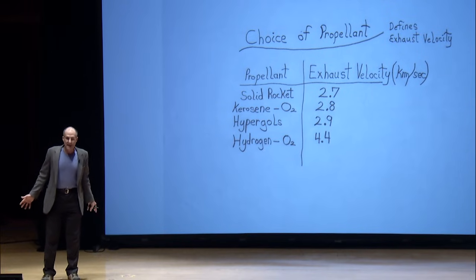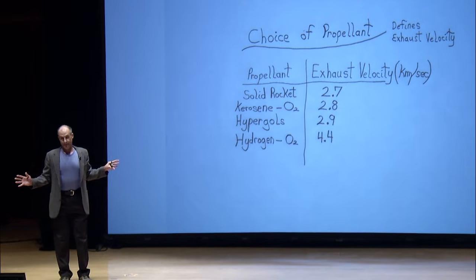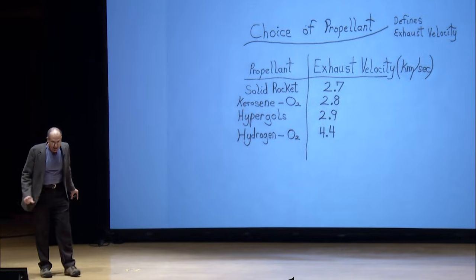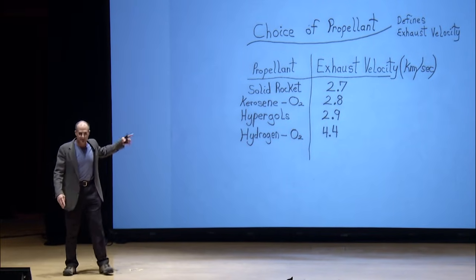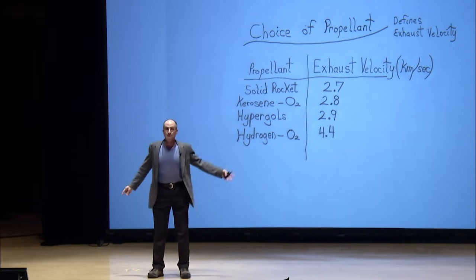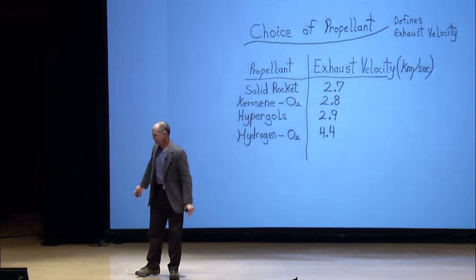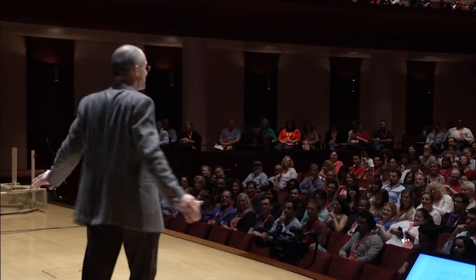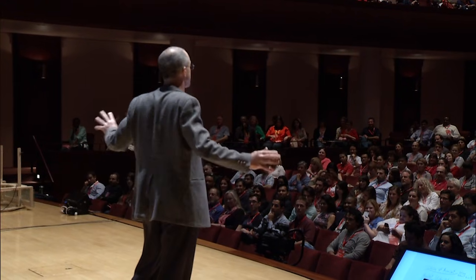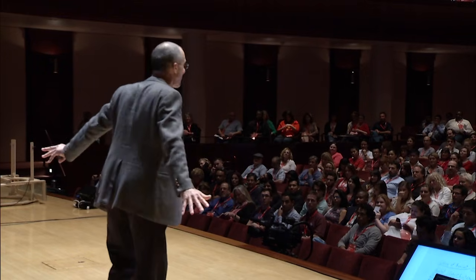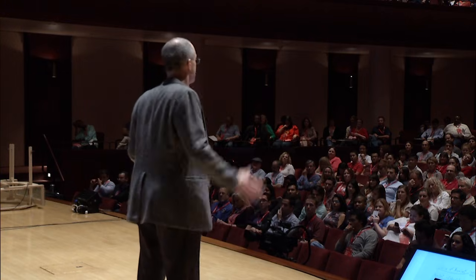Now let's look at our choice for propellants, and this defines the exhaust velocity because the energy in the propellant comes from the chemical bonds and it goes squirting out the nozzle. I've chosen around four different kinds of propellants ranging from solid rocket to kerosene-oxygen, hypergols — where you mix a few oxidizers together and they spontaneously combust — and then good old hydrogen-oxygen, which turns out to be one of the more energetic chemical reactions we could use. These are all chosen from real rockets that can take real payload and real human beings into orbit right now. And those are the exhaust velocities — because that's all you can get right now from chemistry.